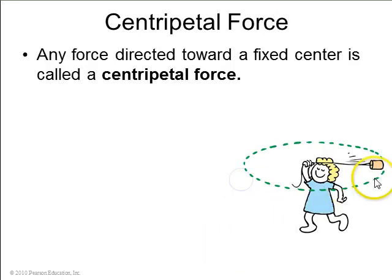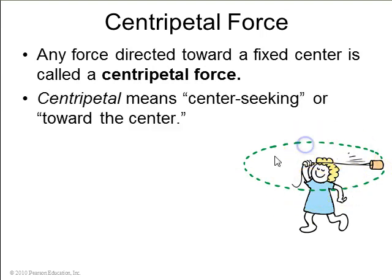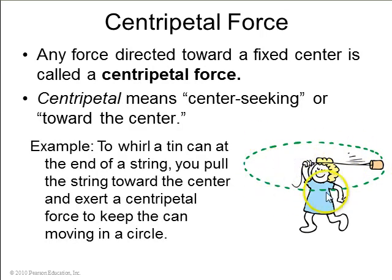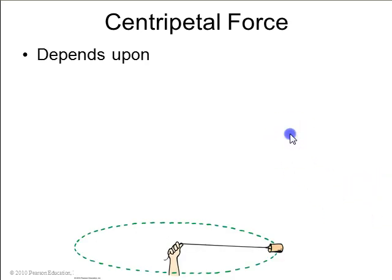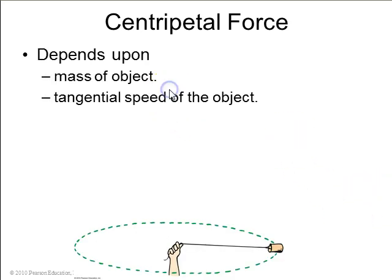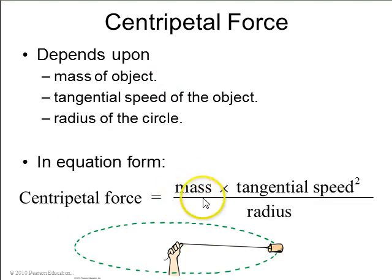Centripetal force. A centripetal force is just a force which pulls an object towards the center. It's a center-seeking force. So for example, if you're whirling this tin can around in a circle, this tension in the string pulls towards the center and provides centripetal force. Centripetal force depends on the mass of the object, the speed that the object's going and the radius of the circle by mass times v squared over r.